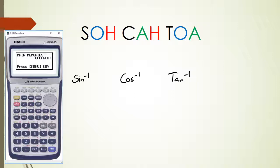All of these can be found above the sine, cos, and tan buttons on your calculator. To access those buttons you press shift - shift sine, shift cos, shift tan - to actually get the inverse functions. That's the first thing you need to know.